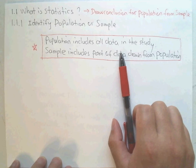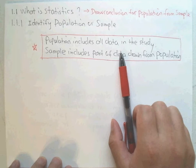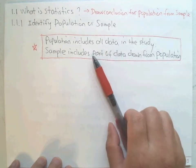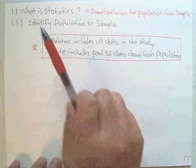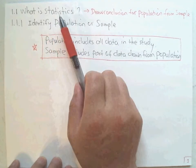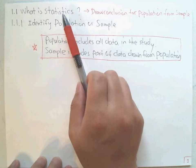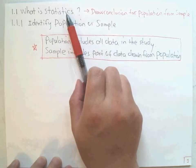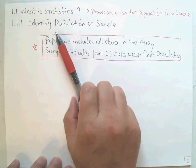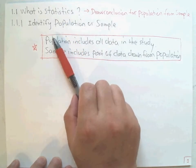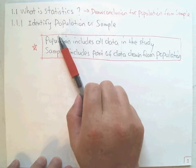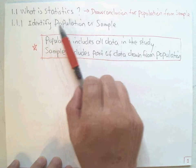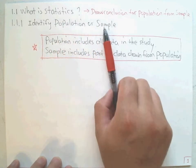Hello, this is Paul from FOSAT Tech. In this lecture we started talking about statistics. The objective of this lecture today is to identify population, for example, which is the beginning of statistics.